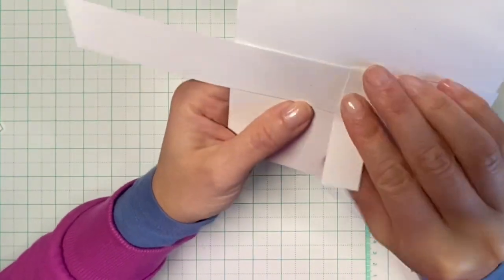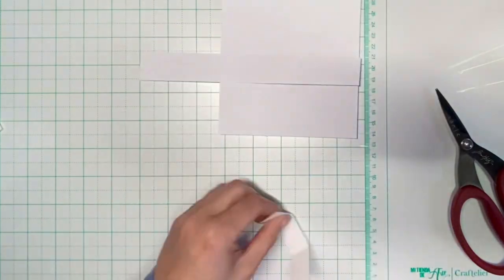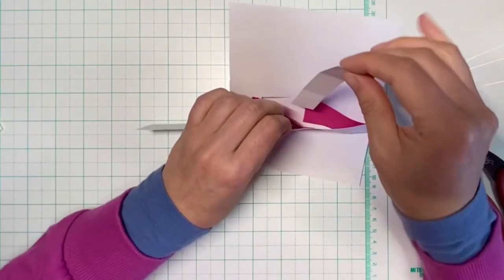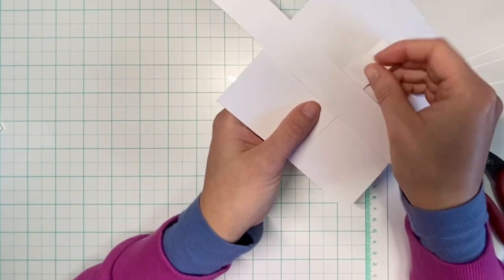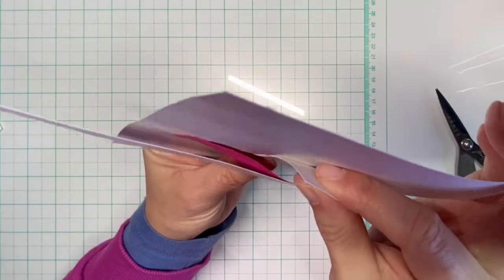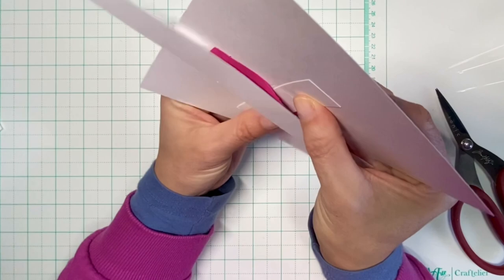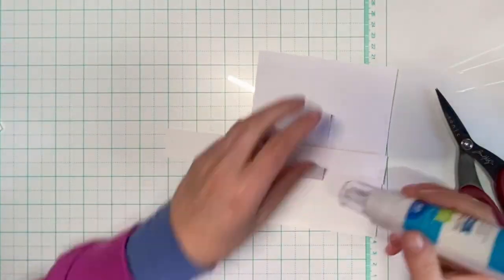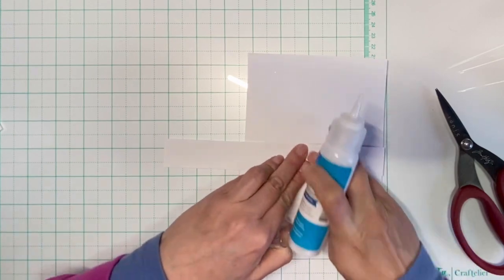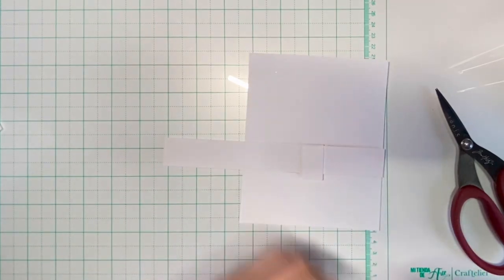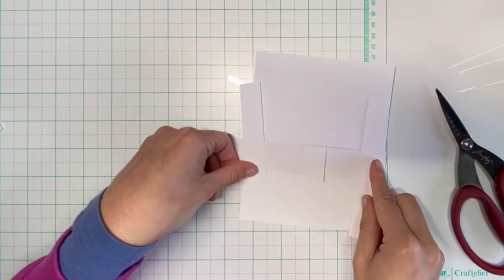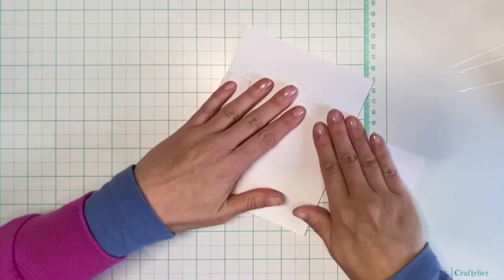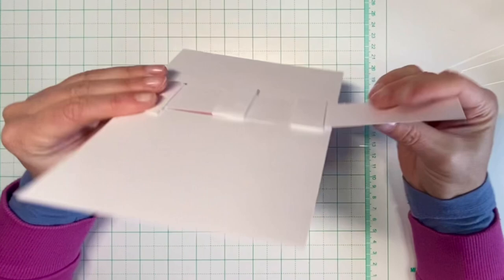But for this purpose I just cut them on my own and I will adhere one of them between the two openings, and then one to the left and one to the right next to the two openings.